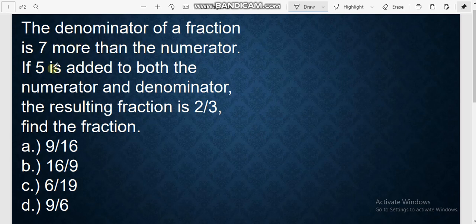The denominator of a fraction is 7 more than the numerator. If 5 is added to both the numerator and denominator, the resulting fraction is 2/3. Find the fraction.